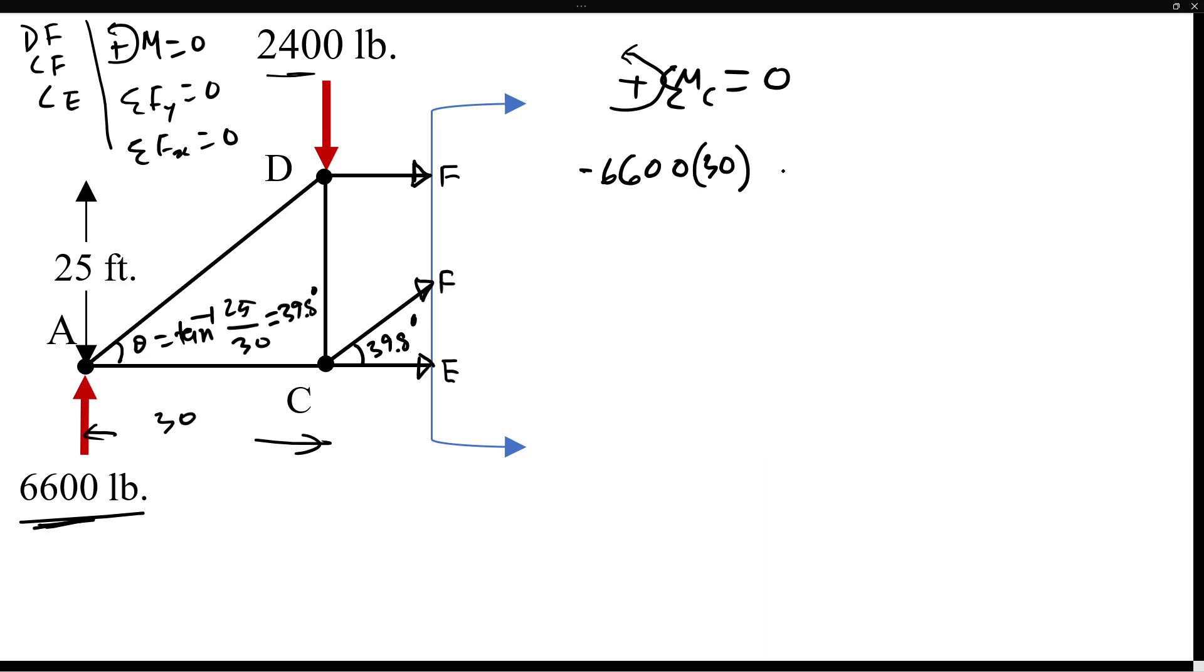You can assume whatever looks good to you. Then there will be a moment for that DF with respect to C, which will also cause a negative moment, so DF times 25 feet away from C. Everything sums to zero, so then we'll find out the DF is negative 7920.